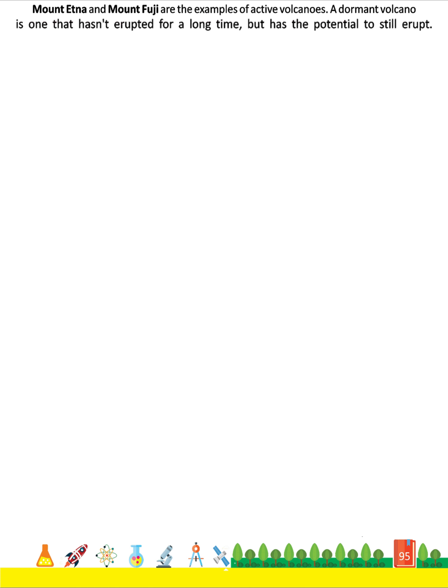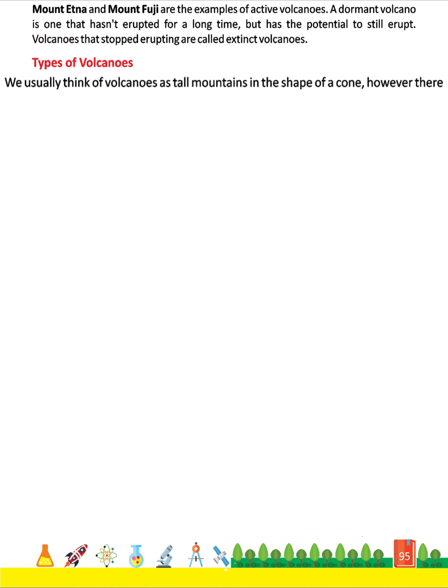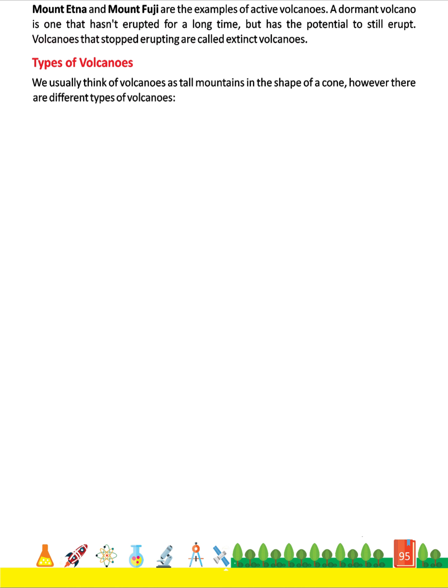Volcanoes that have stopped erupting are called extinct volcanoes. We usually think of volcanoes as tall mountains in the shape of a cone. However, there are different types of volcanoes.